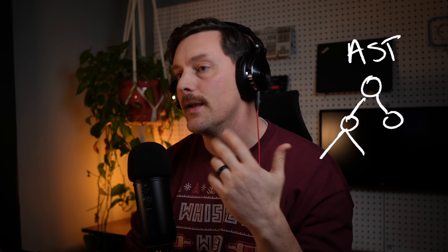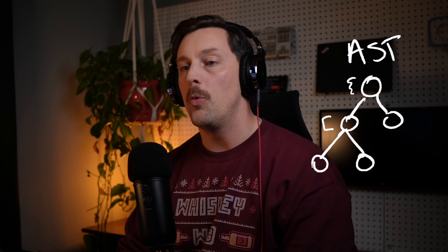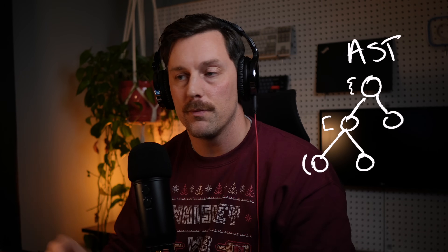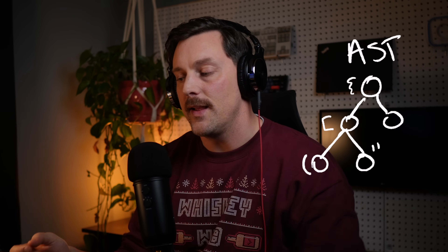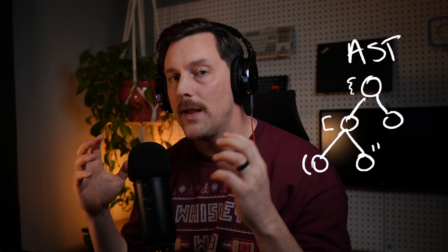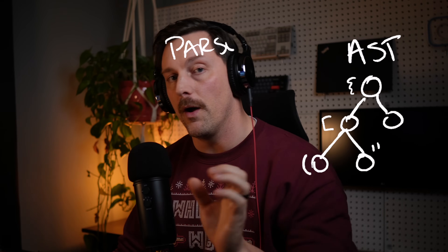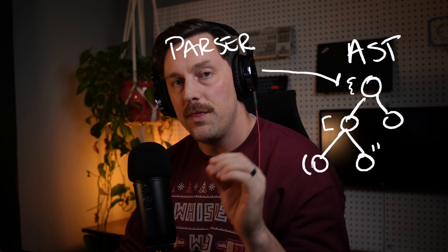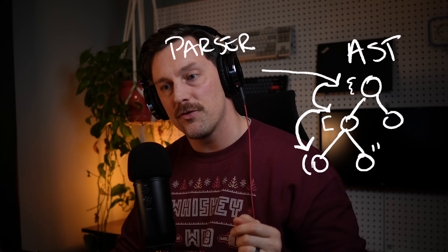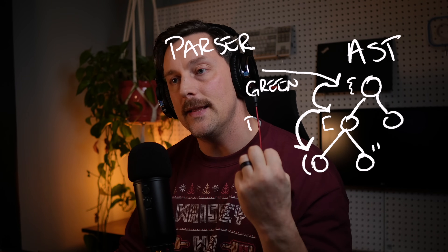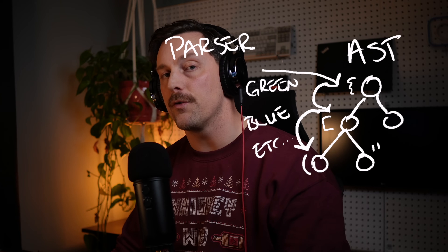An abstract syntax tree keeps information throughout the codebase based on certain symbols — like an open curly brace or open and close quotes — and puts them into an easy-to-digest format for parsers. People have developed parsers on top of tree-sitter that go through the AST and parse out the pieces needed to highlight text on screen.